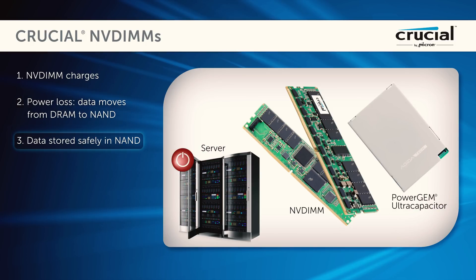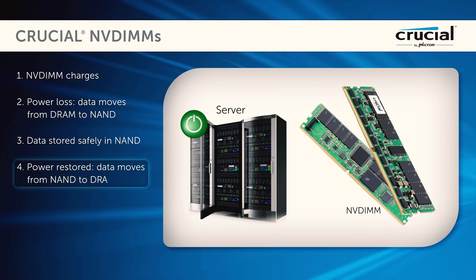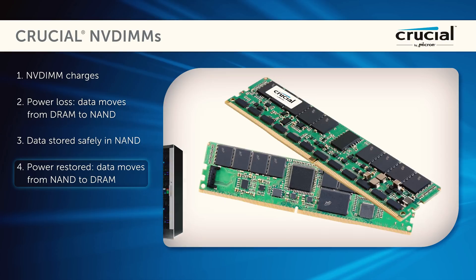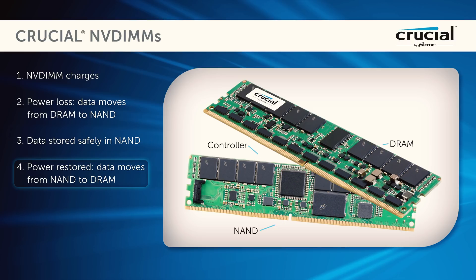At this point, no data resides on the DRAM — it is now secure in the NAND. When power is restored to the system, the system BIOS recognizes the presence of the NVDIMM. The image backed up by the NAND during the backup operation is transported through the controller and into the DRAM, which restores the state of the data at the time of the power loss.